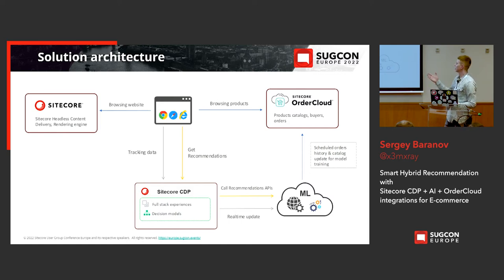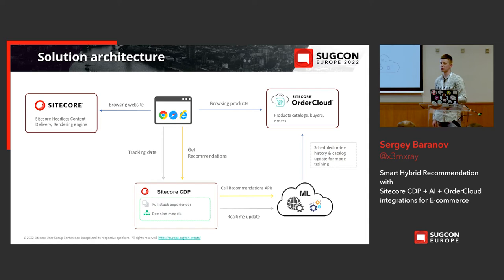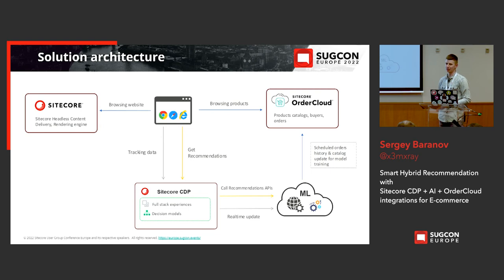We also have a machine learning service — our own implementation, a .NET Core-based application that works just like a web API. Before we can use recommendations, we need to train our models. To do this, we download all order history and all information about products from OrderCloud, then train our models. We use CDP as a middleware layer between our browser and the machine learning service — Sitecore CDP tracks all user interactions and can help us measure the performance of recommendation widgets, calculate revenue, conversions, and is also a very good place for debugging.